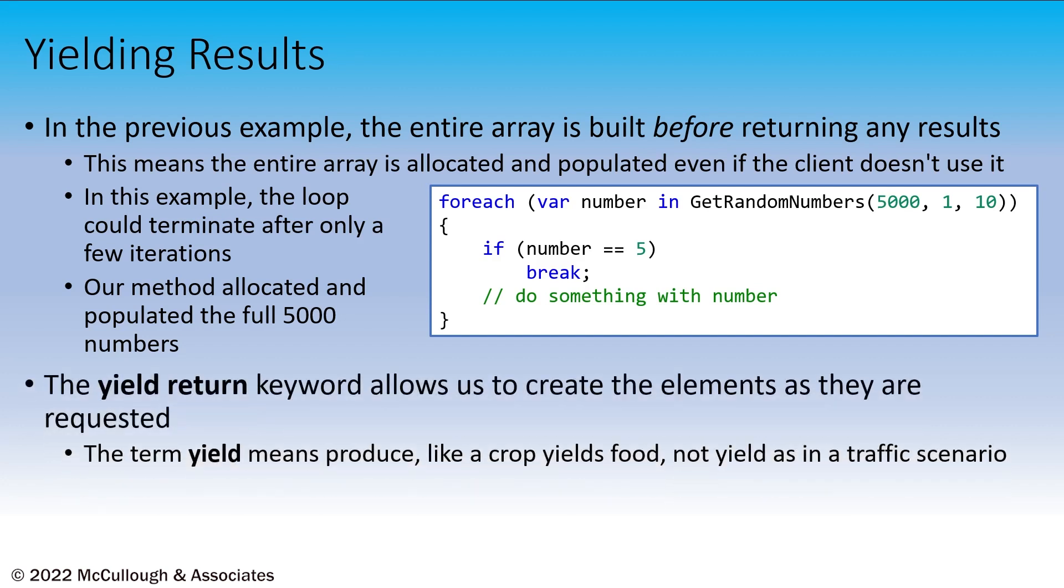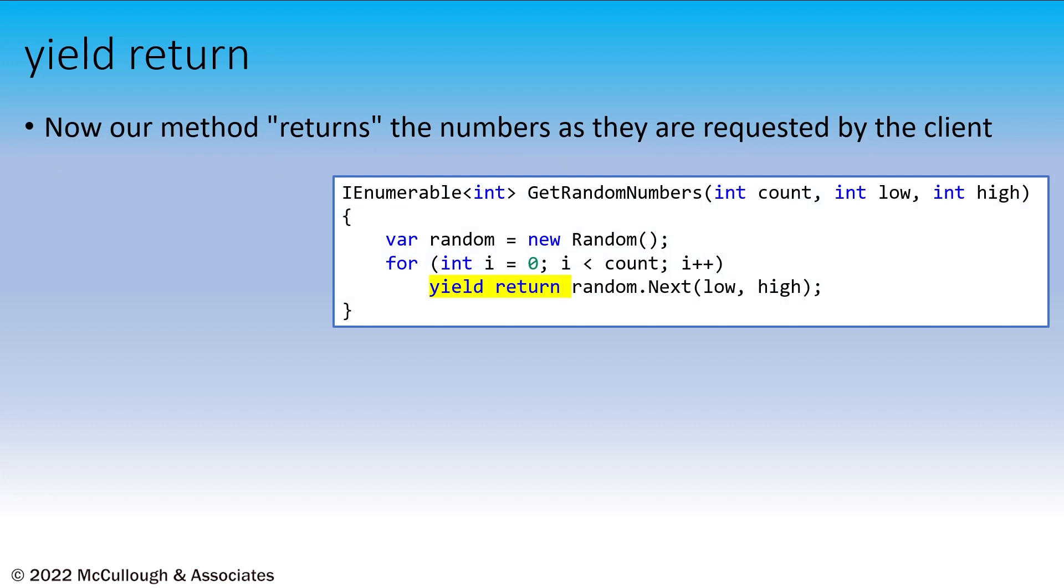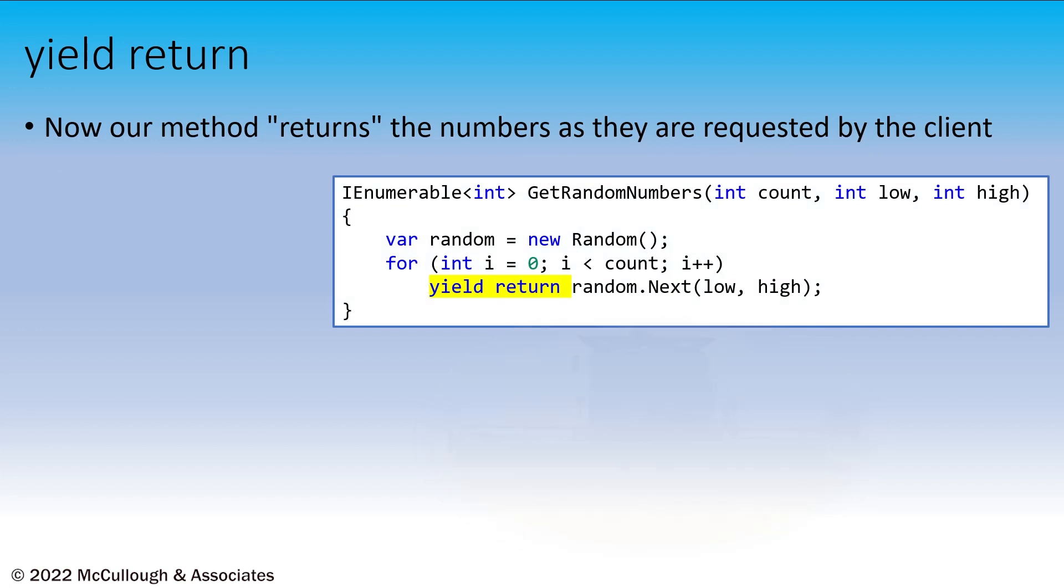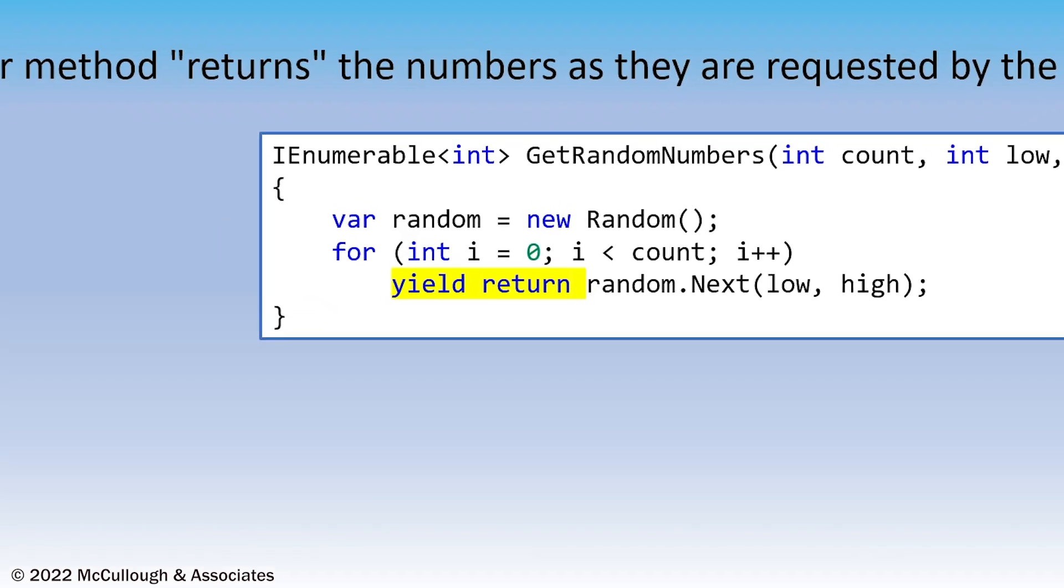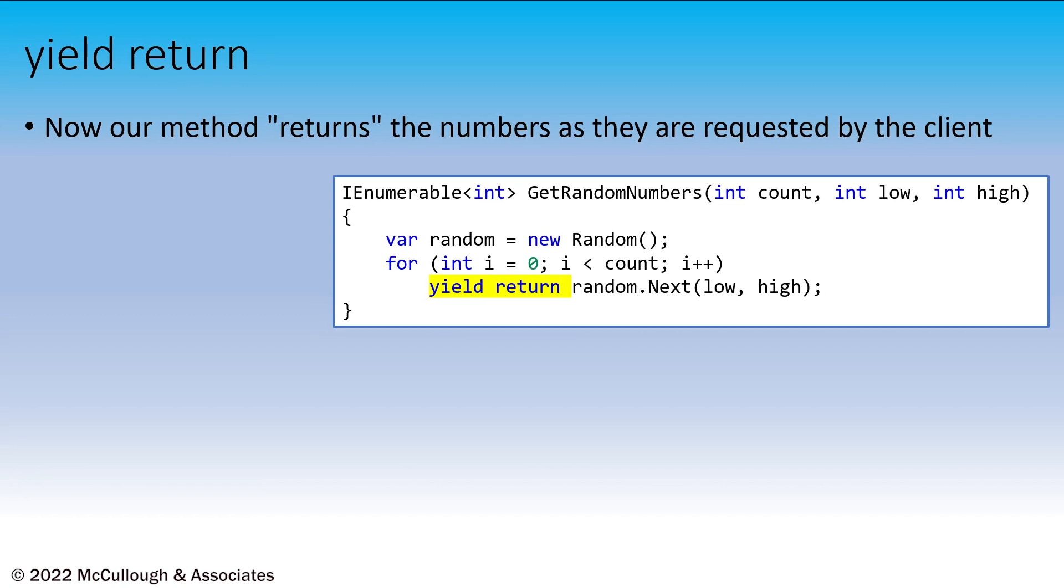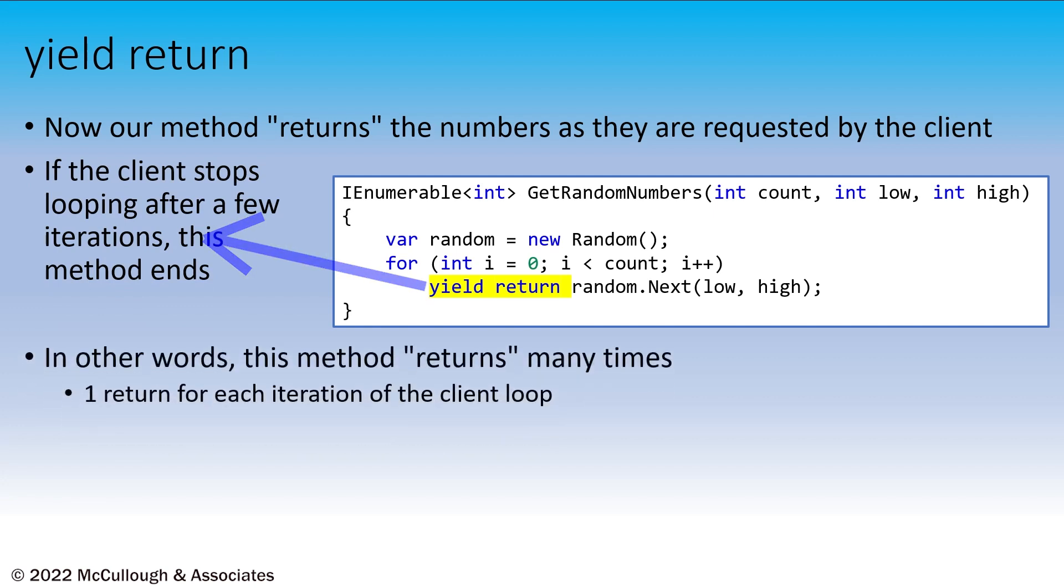We can change up our code to use yield return, and we can short-circuit that cost. Yield return produces a single element in the sequence. In this reworked GetRandomNumbers method, we don't allocate the array, and we don't populate an array. Instead, our loop produces or yields the elements one at a time using the keywords yield return. Each iteration of the for loop in the client code executes in our method to the next occurrence of yield return. That would be the next iteration in our loop. In other words, this method doesn't just return once, but it returns many times, each time yielding or producing a single element in the sequence.